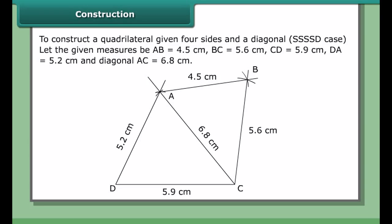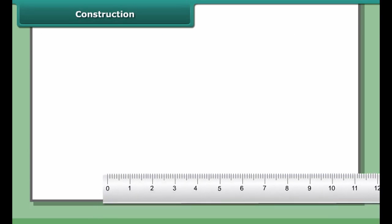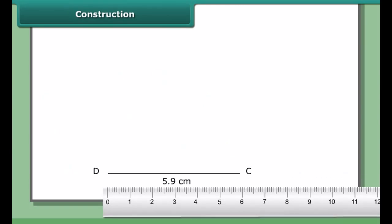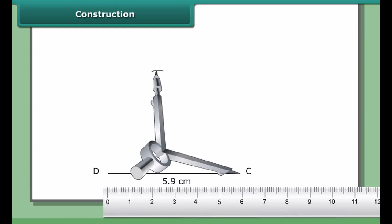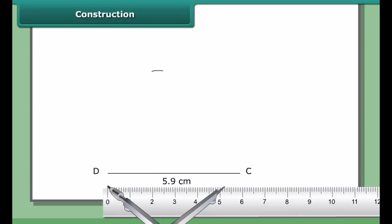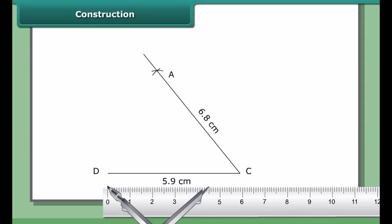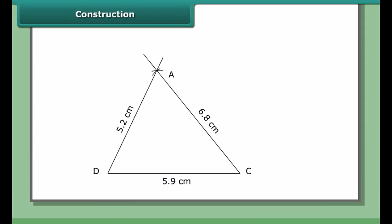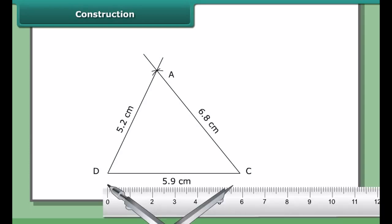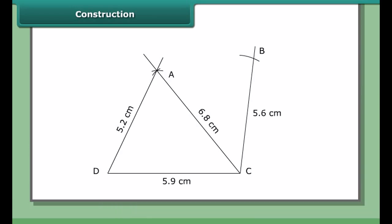Constructing triangle ADC: Draw DC equal to 5.9 cm. With C as center and radius 6.8 cm, draw an arc. With D as center and radius 6.9 cm, and with C as center and radius 6.9 cm, draw an arc on the other side of AC.